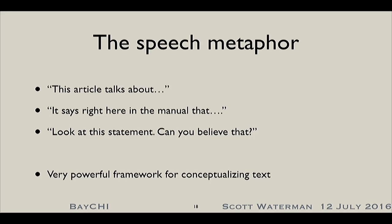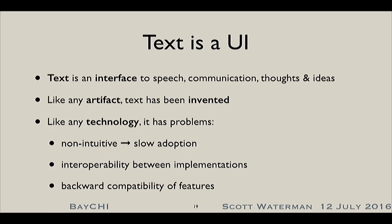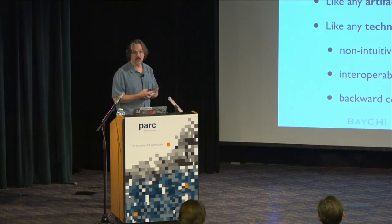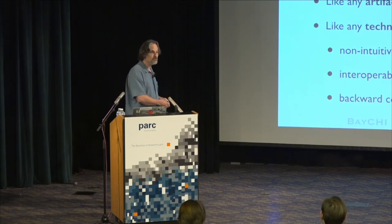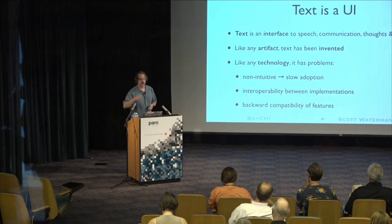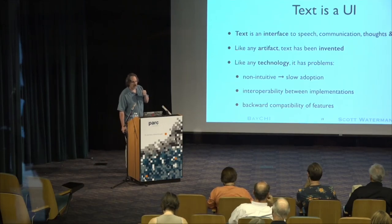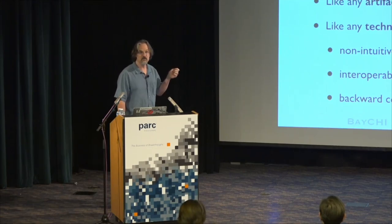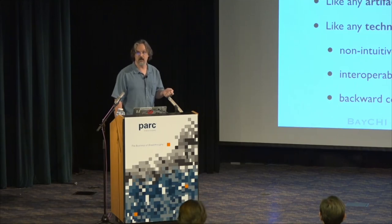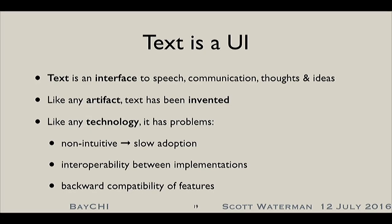My contention is that text really is an interface — an interface to speech and language and communication. And those themselves are a layer on top of thoughts and ideas. Text is a technological interface we've imposed on top of that. Like any technology, like any artifact, we've had to invent it. It's gone through multiple generations and revisions over the 5,000 years we've been doing this. Text is really non-intuitive. If you think about it, it's the only technology that we literally spend years teaching our children how to use. Reading does not come out of the blue.